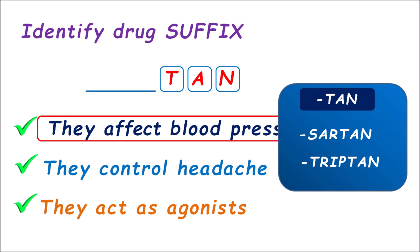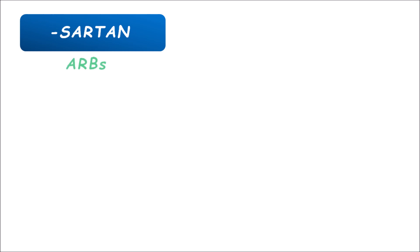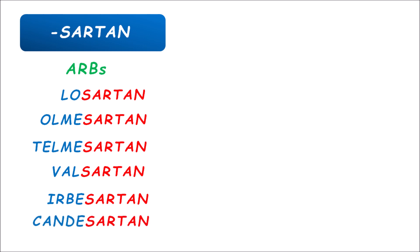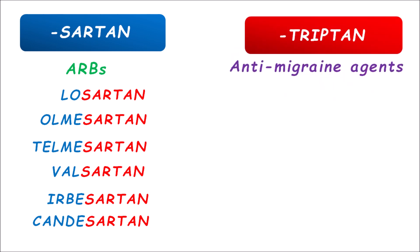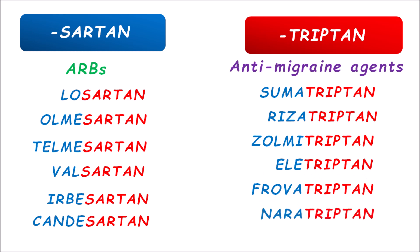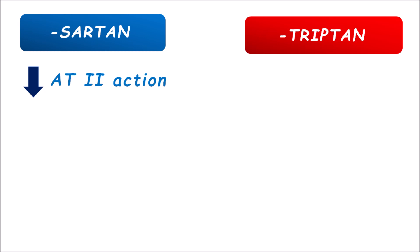To find the answer, the first clue is they affect blood pressure. Sartans are angiotensin receptor blockers, commonly known as ARBs, ending with the suffix '-sartan.' Drugs include losartan, olmesartan, telmisartan, valsartan, irbesartan, and candesartan. They block the angiotensin 2 receptor type 1 (AT1), inhibiting vasoconstriction and thereby reducing blood pressure — that is why sartans are used as antihypertensive agents.